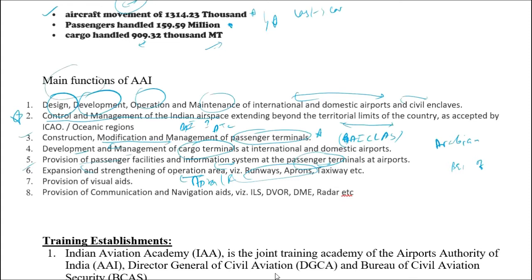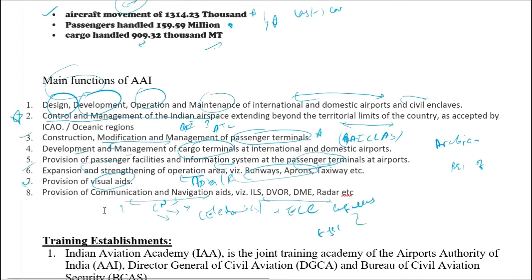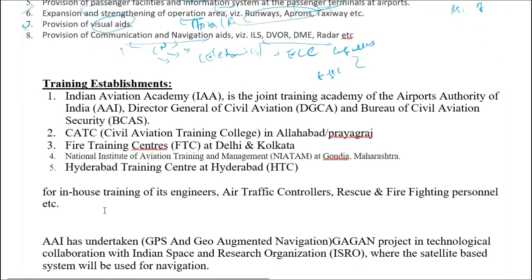Another function is the provision of visual aids. AAI also provides communication and navigation aids such as ILS, DVR, DME, and radar. This falls under CNS - Communication, Navigation, and Surveillance - which is entirely handled by the electronics (ECE) department.